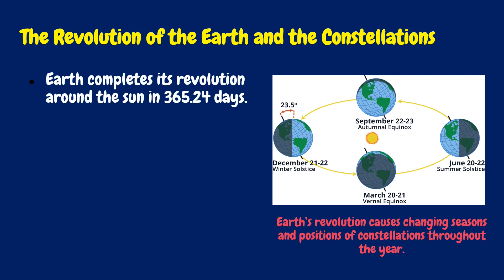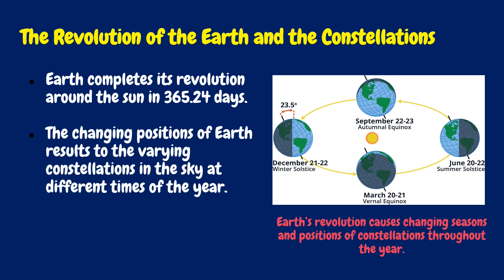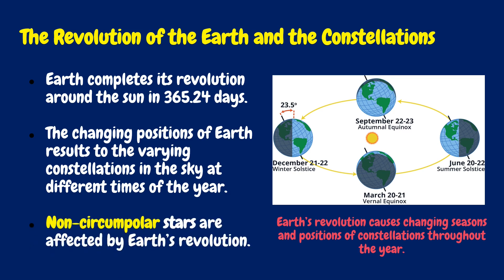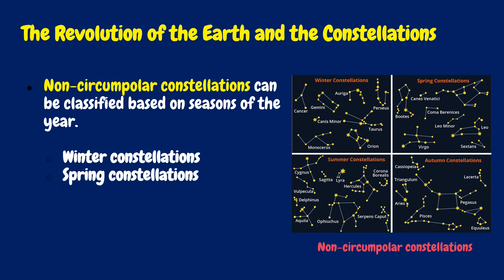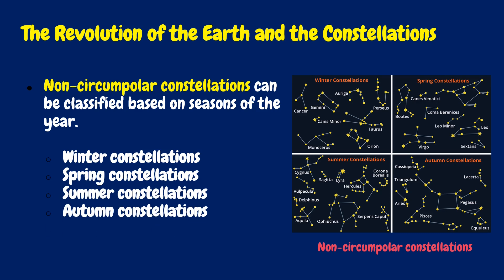Earth completes its revolution around the Sun in 365.24 days. The changing positions of Earth result in the varying constellations in the sky at different times of the year. Non-circumpolar stars are affected by Earth's revolution. Non-circumpolar constellations can be classified based on seasons of the year: winter constellations, spring constellations, summer constellations, and autumn constellations.